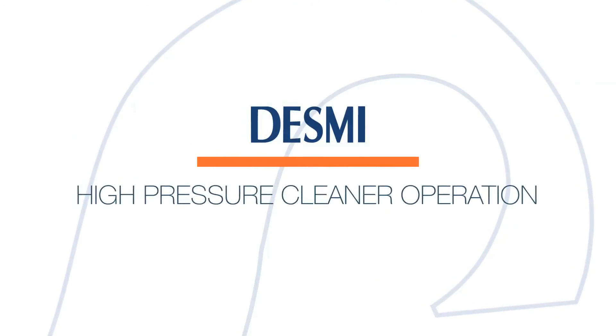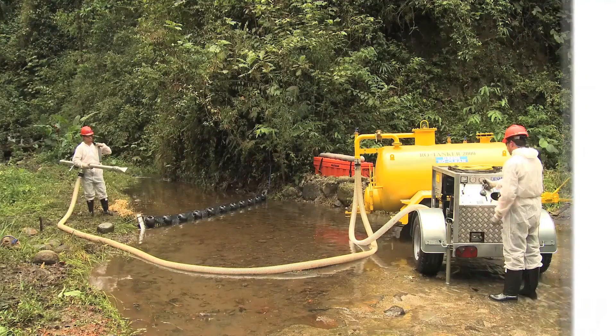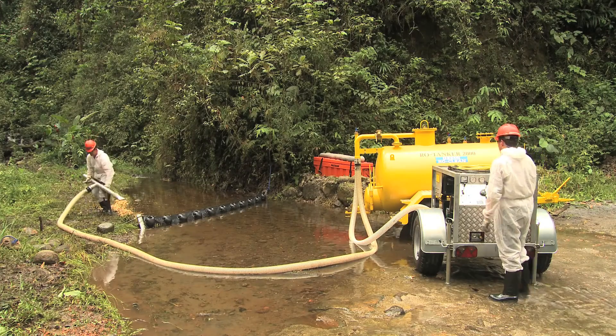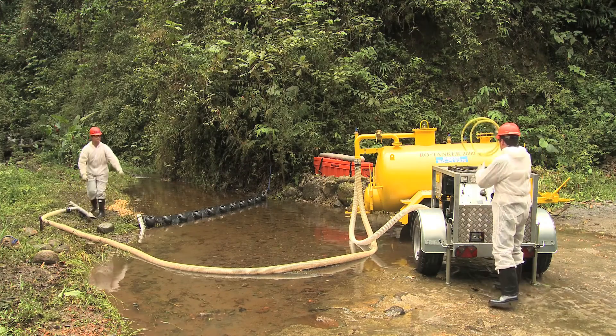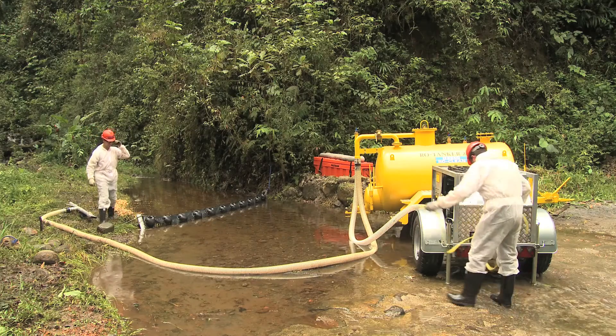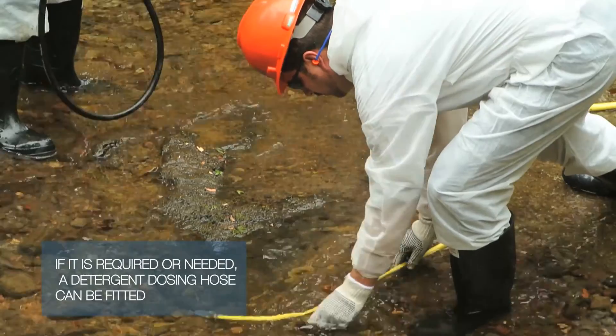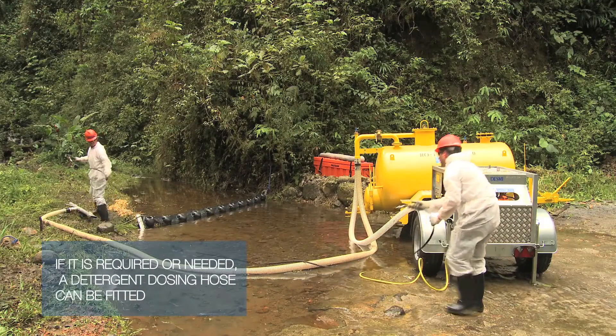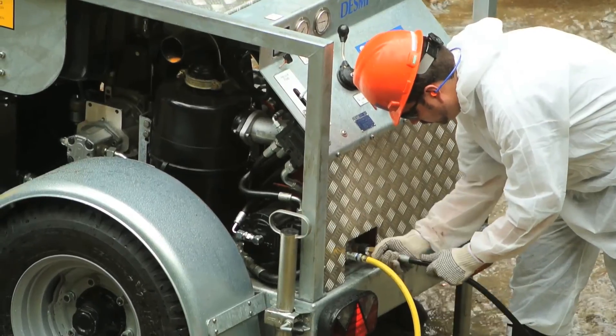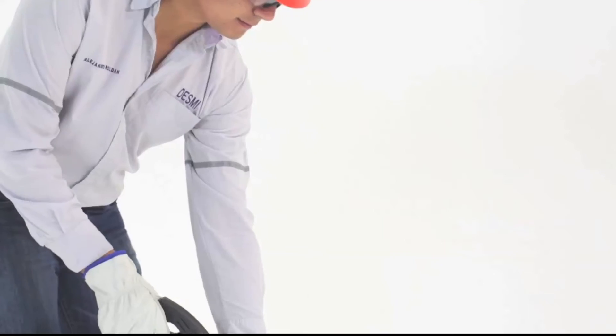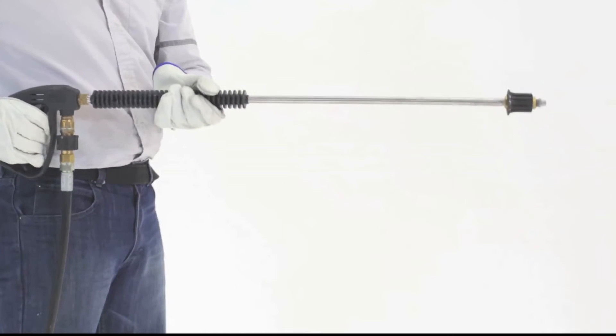Operation of the High Pressure Cleaner. Connect the 1/2-inch water supply hose to the water source. Check that the suction filter is fitted at the inlet and completely submerged in the water. Connect the 3/8-inch high pressure hose with the hand lance at one end to the screw coupling.